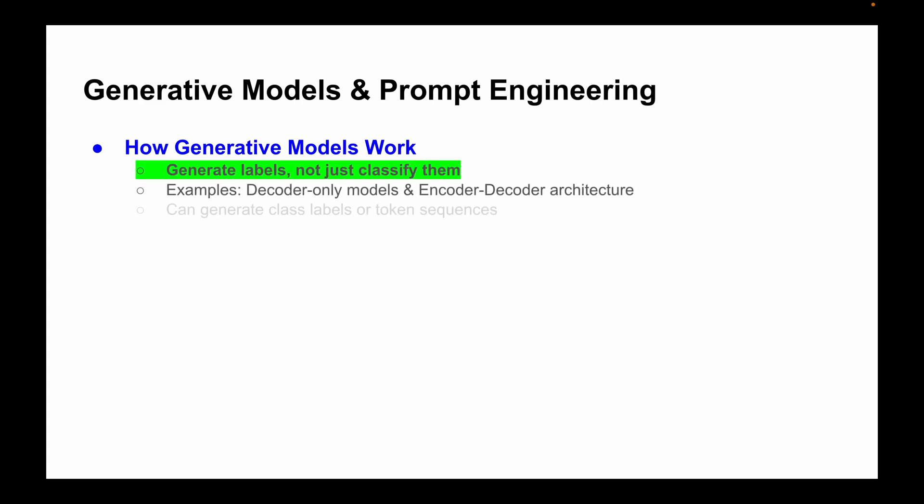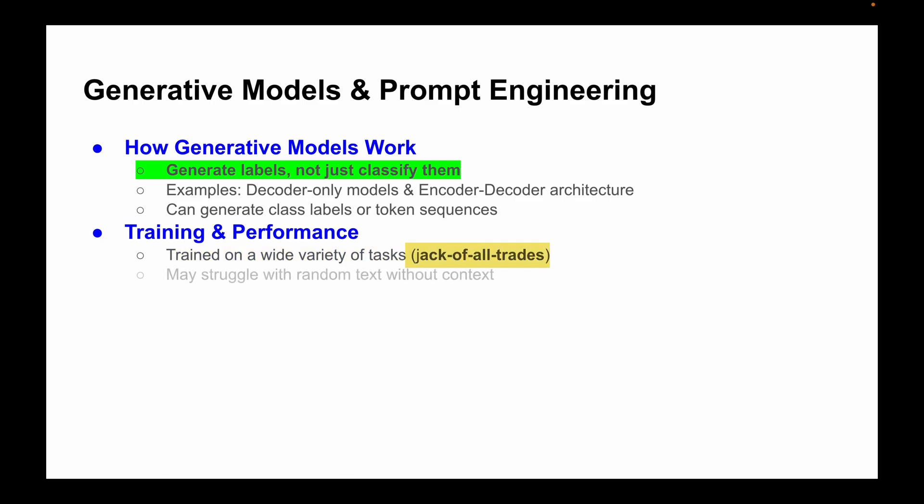As we saw in the previous slide, generative models work differently for text classification. Instead of just classifying text into labels, these models generate the labels themselves. These models are trained on a wide variety of tasks - they're like jacks of all trades but don't always perform well when given random text without context. Why? Because generative models need guidance to get the correct output.